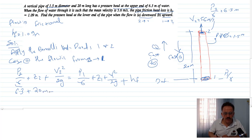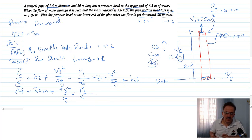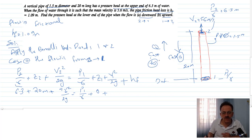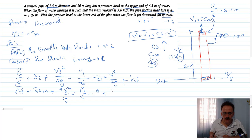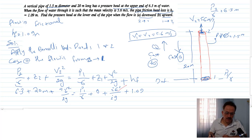Taking the datum at point 1, z1 equals 0 and z2 equals 20 meters. The pressure head p2 over gamma equals 6.3 meters. By continuity equation, since the pipe diameter is constant, v1 equals v2 equals 5.6 meters per second. Substituting: 6.3 plus 20 plus 5.6 squared over 2g equals p1 over gamma plus 0 plus 5.6 squared over 2g plus 1.09.